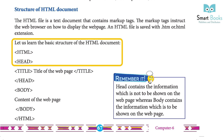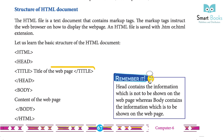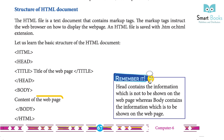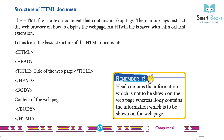Basic HTML structure: HTML > Head > Title (title of the web page) > /Title > /Head > Body (content of the web page) > /Body > /HTML. Remember: Head contains the information which is not to be shown on the web page, whereas Body contains the information which is to be shown on the web page.